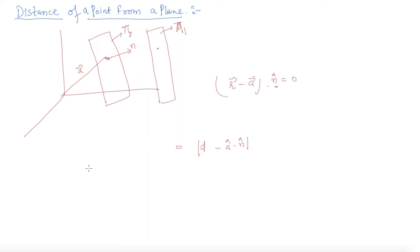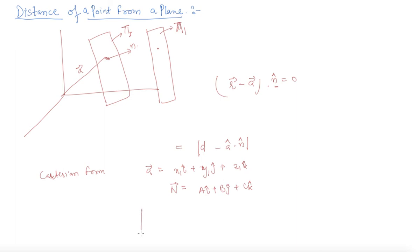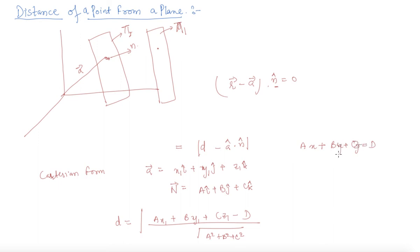This is the distance in vector form. In Cartesian form, if the position vector of the point is x1·i + y1·j + z1·k and the normal vector n is a·i + b·j + c·k, then the distance is given by |ax1 + by1 + cz1 − d| / √(a² + b² + c²), where the plane is given by ax + by + cz = d.